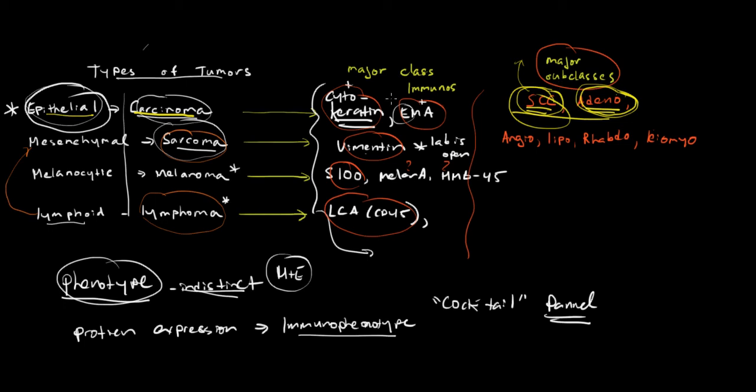And there are some markers that will help distinguish between these two categories, although between adeno and squamous cell, often the light microscopic phenotype will tell you. But there are some markers, such as the type of keratins, the type of cytokeratins that are positive. But we'll leave that for a later talk.